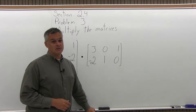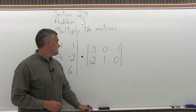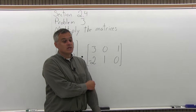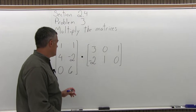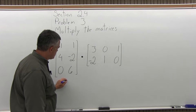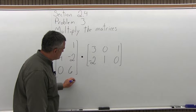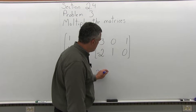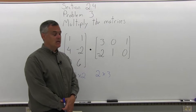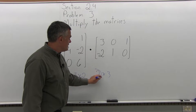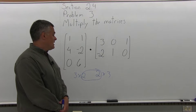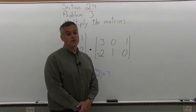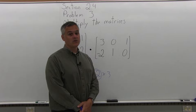First you want to see if there is an answer. To do that, verify that the number of columns in the first matrix equals the number of rows in the second matrix. Write the dimensions of each matrix underneath. The first matrix is a 3 by 2 matrix because it has 3 rows and 2 columns. The second matrix is a 2 by 3 matrix because it has 2 rows and 3 columns. The inner numbers are both 2, so they match, meaning there is a solution.